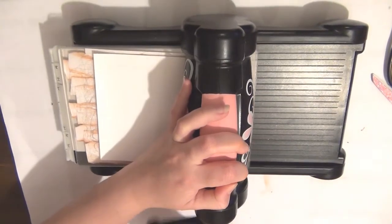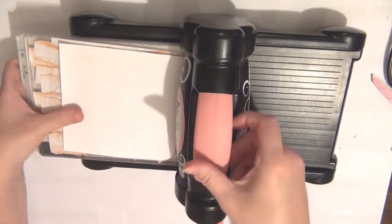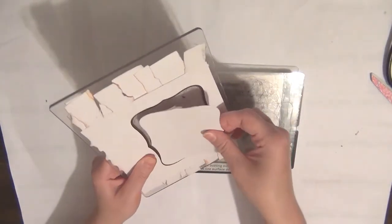I like to run it backwards and forwards a couple of times just to make sure. Once you've done that, you should have your die cut ready to use on your bag.